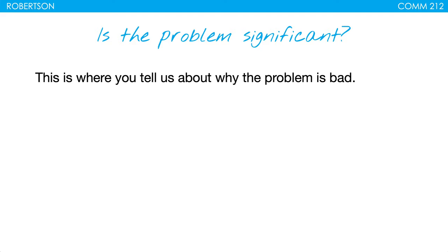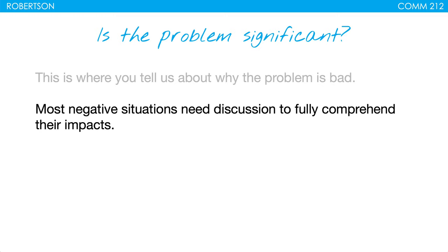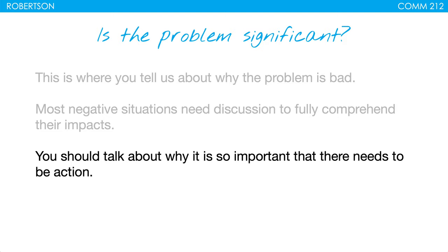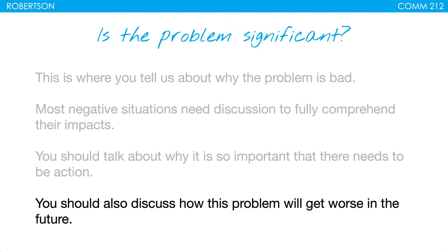Is the problem significant? This is where you tell us why the problem is bad. Most negative situations need discussion to fully comprehend their impacts, and you should talk about why it's so important that action needs to be taken. Here you could give examples of those potentially impacted by the problem. You're trying to make people care. You should also discuss how this problem is going to get worse in the future — you need to show this isn't something that will fix itself.